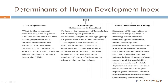What are the determinants used to find out the actual Human Development Index? The first one is life expectancy. The second is knowledge — meaning literacy or education. And the third one is good standard of living. So there are three different determinants for the calculation of the Human Development Index.